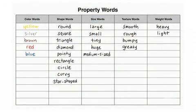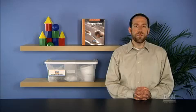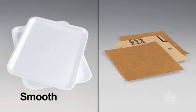Point to the property words chart and read aloud the texture words. Then hold up a sorting tray and pass it around the classroom and ask students what it feels like. Guide the students to understand that the texture of the tray is smooth, whereas the sandpaper's texture is rough.